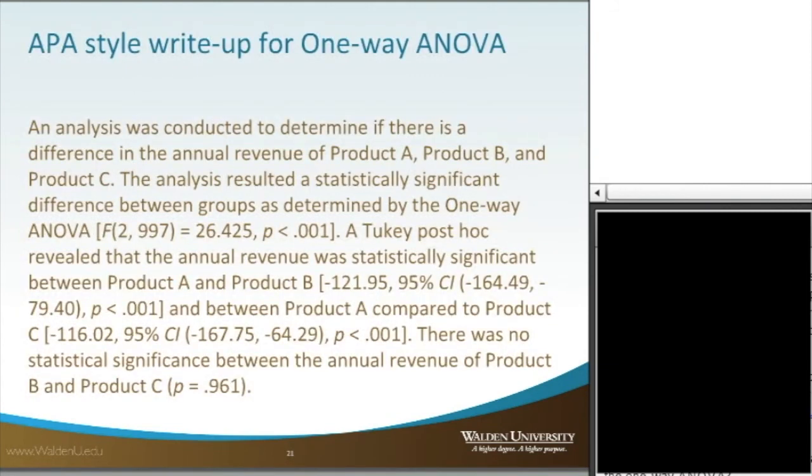So, how do we write this up? Here's an APA-style write-up for one-way ANOVA. An analysis was conducted to determine if there is a difference in the annual revenue of product A, product B, and product C. The analysis resulted in a statistically significant difference between groups as determined by the one-way ANOVA. And here we'll put in the F values, you know, F(2, 997) = 26.425, and the p value less than .001.